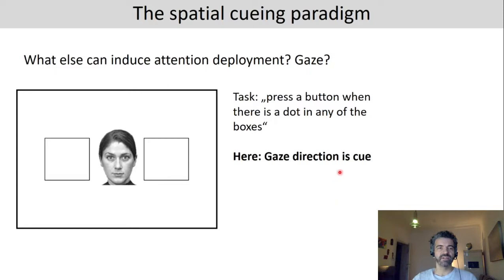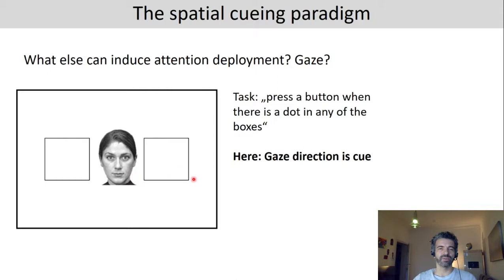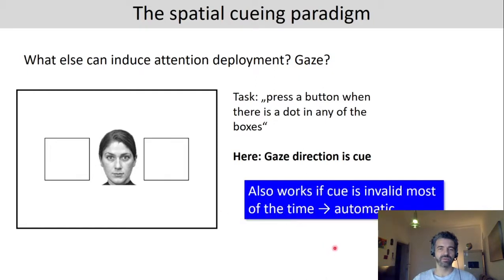What else can induce attention deployment? Gaze was suggested and experimentally tested by Frischen and colleagues in 2007. The task was to press a button when there is a dot in any of the boxes. In terms of cueing experiments, a valid trial is one where the person looked in the direction of where the target was then presented — so gaze direction is the spatial cue. This also works if the cue is invalid most of the time, suggesting it is more automatic.